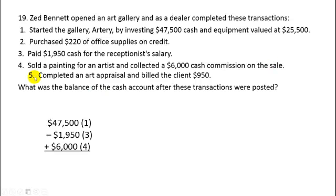And number five: completed an art appraisal and billed the client $9.50. When you bill a client, that means you don't get any money, so there's no effect on cash. So those three transactions affected cash — one, three, and four — meaning cash now has a balance of $51,550.